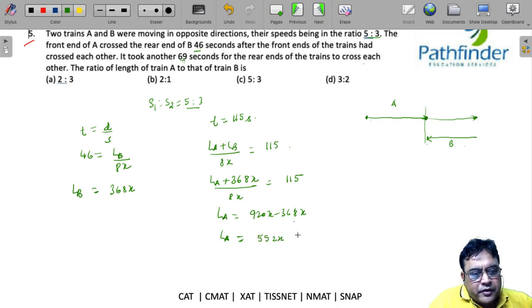So what is the ratio required? 368x to 552x, because we are looking at the length of the two trains. So dividing both by 8, we get 46 to 69.